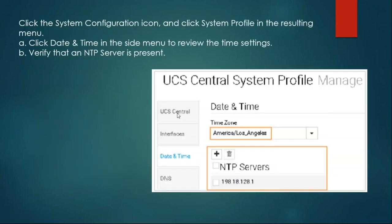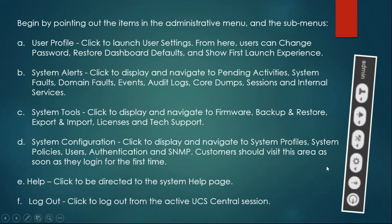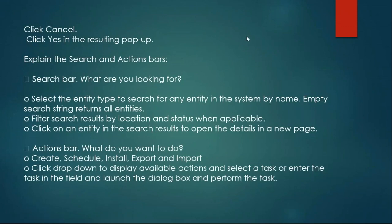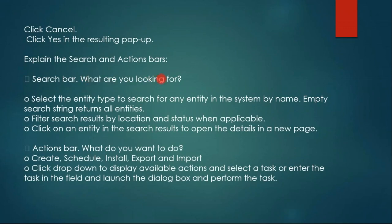Here comes an important thing: since this is a search-based management engine, we have basically two types of search — a search bar and an action bar. The search bar tells you what you are looking for: pools, policies, profiles, templates, VLANs, VSANs, and so on. The action bar shows what you want to do — if you want to configure pools, profiles, VLANs, VSANs, you go there.